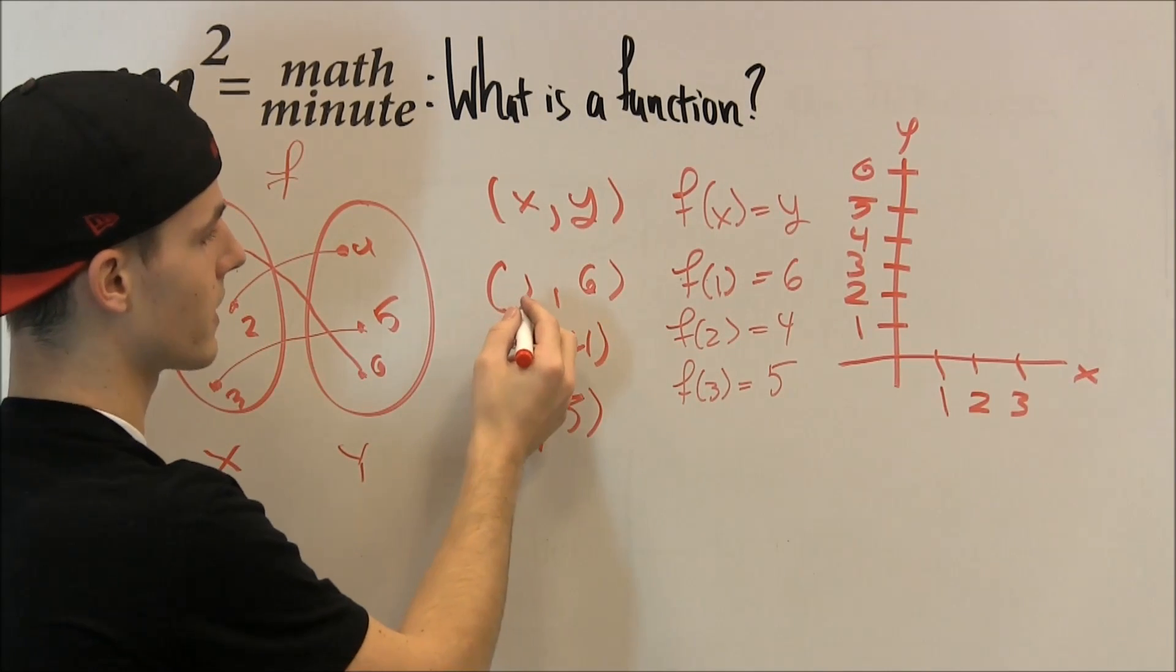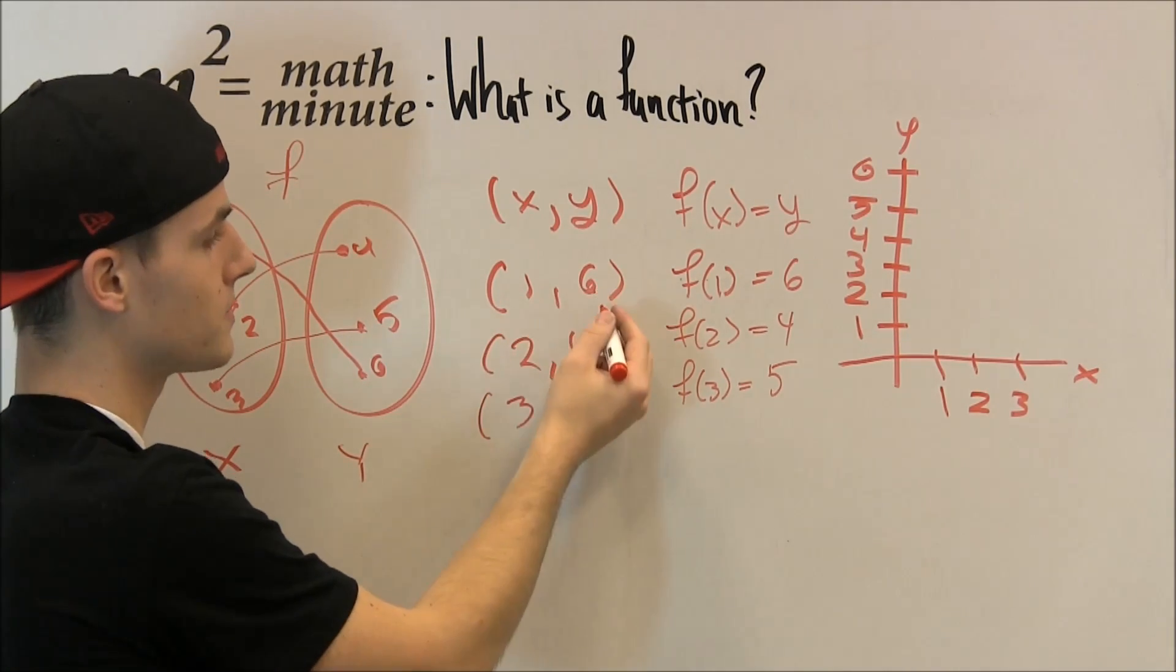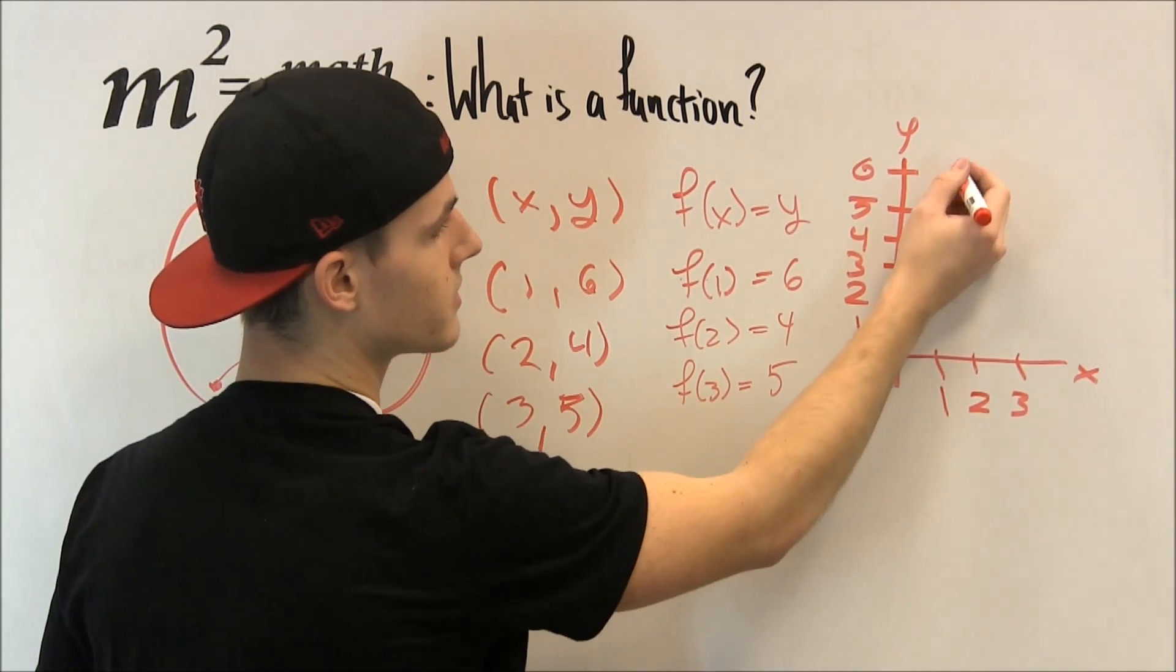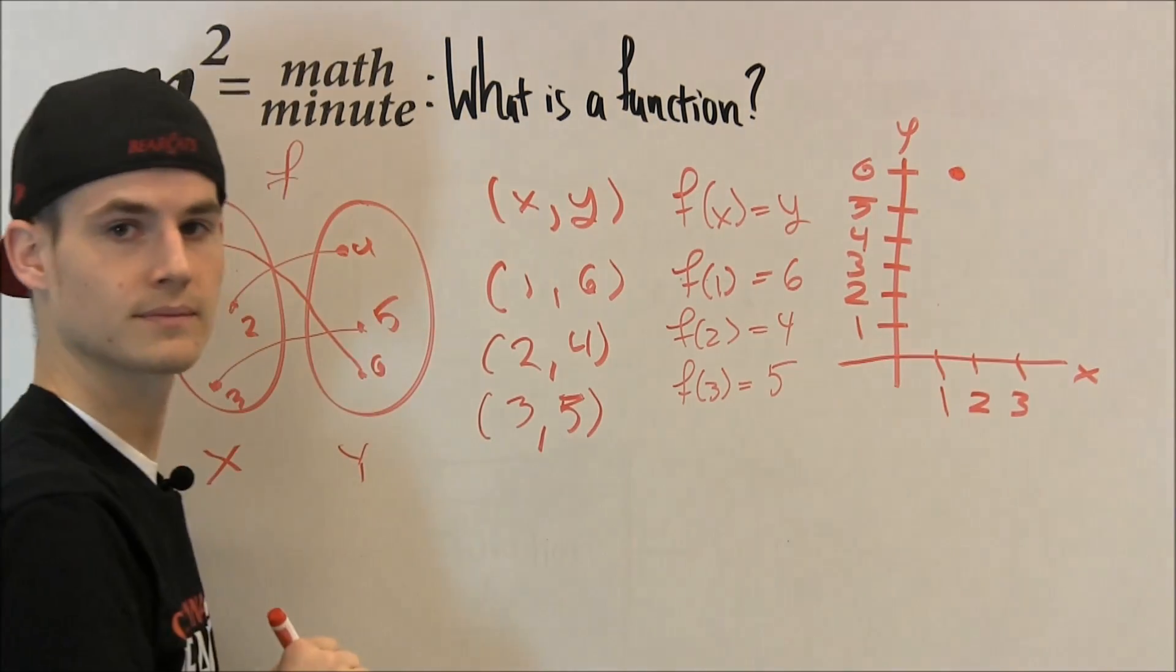So what we're going to do is we're going to count over 1 and we're going to count up 6. So 1, 1, 2, 3, 4, 5, 6. So we put a point there.